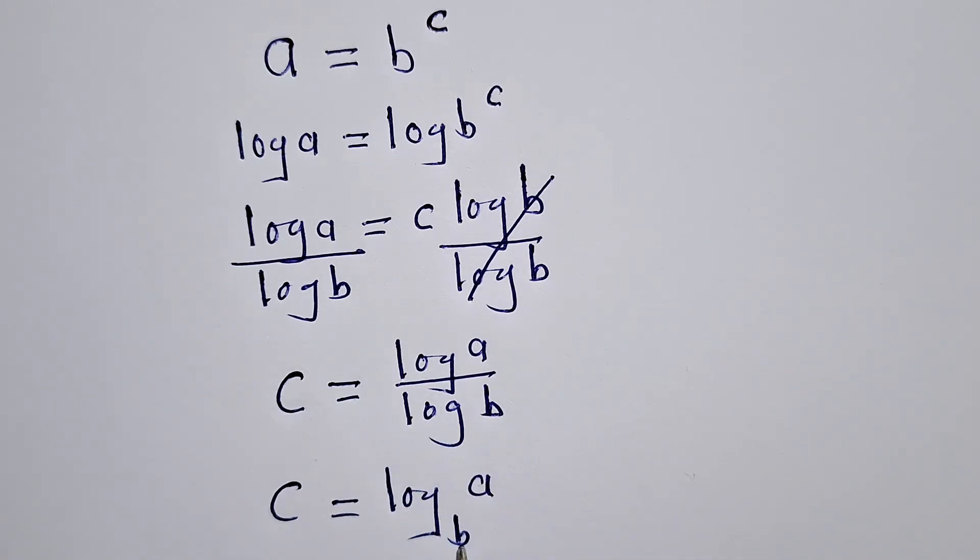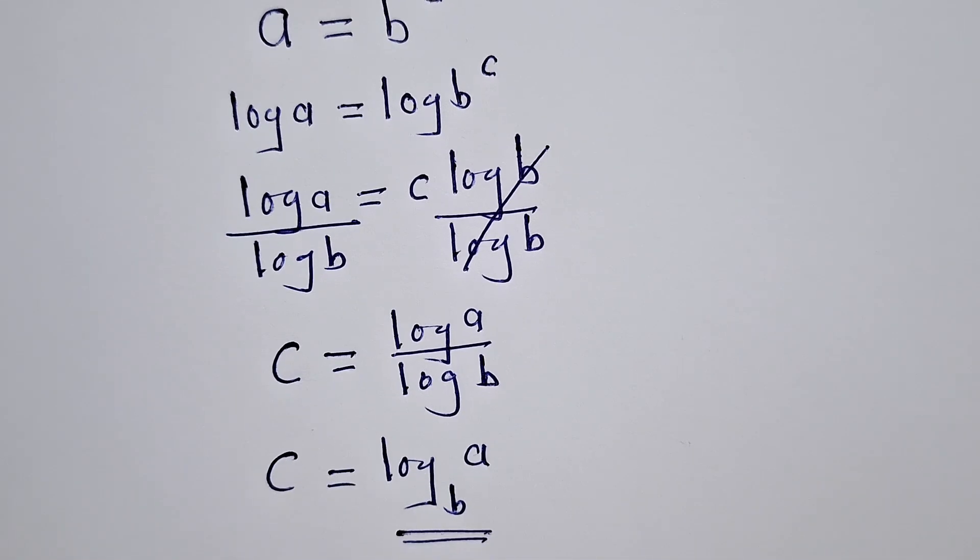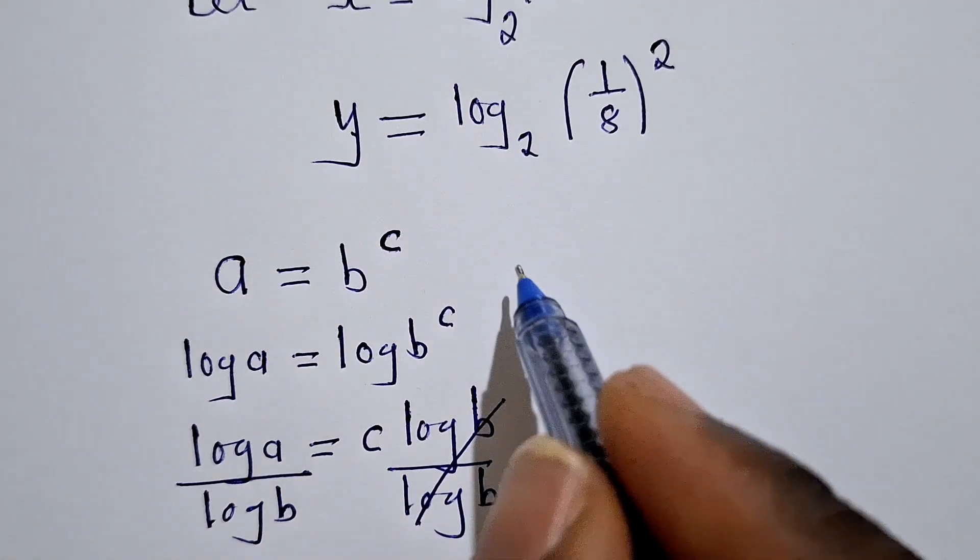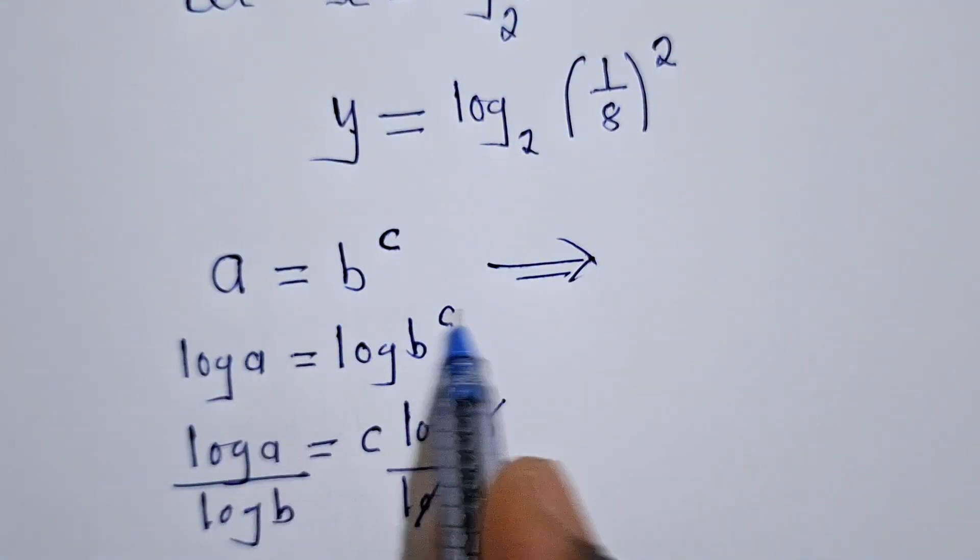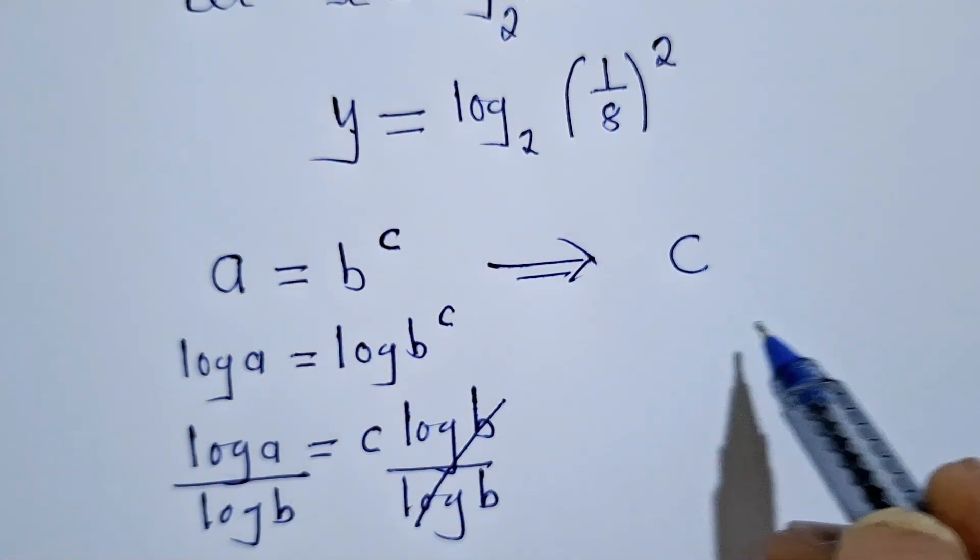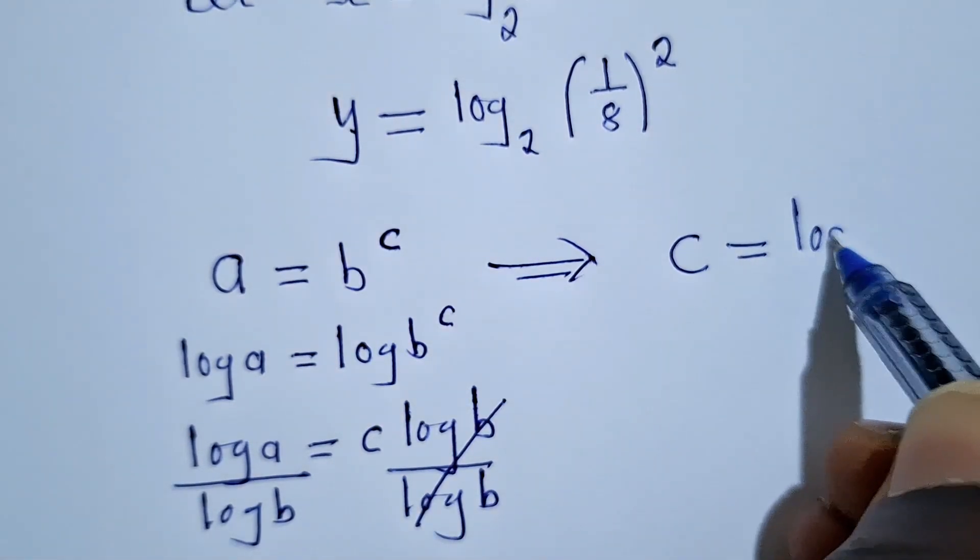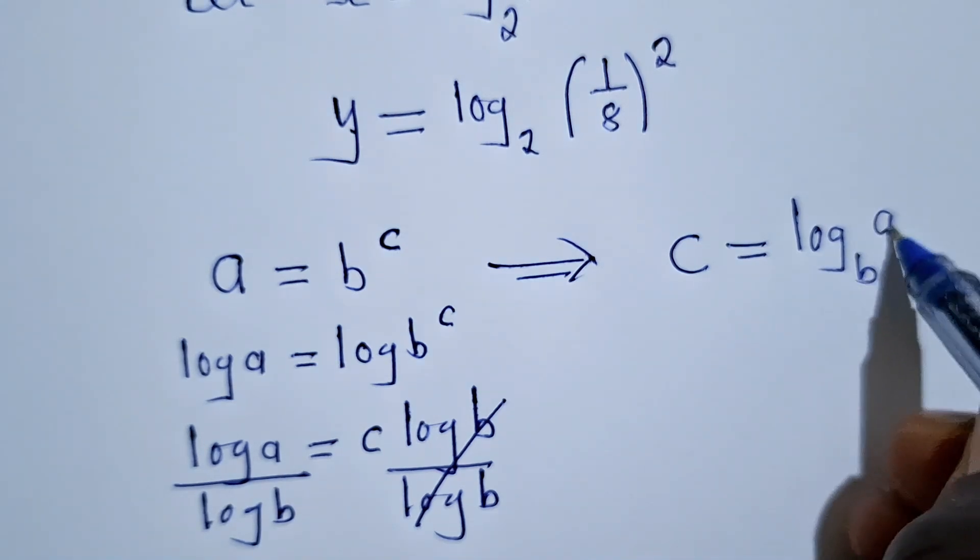So the denominator here becomes the base, like this. So what I wanted to get out of this was that what we have here, this can be written as c is equal to log base b of a.